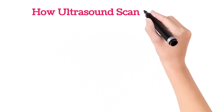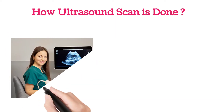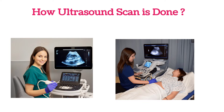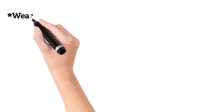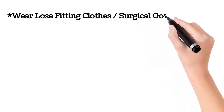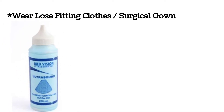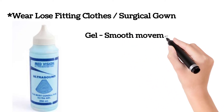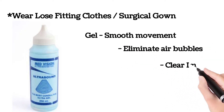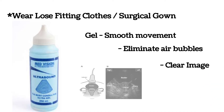It is a simple procedure. During this procedure, the patient is asked to lie on their back on a comfortable table, and depending upon the type of scan, the patient is asked to wear a surgical gown or normal clothes. During the scan, the patient should wear loose-fitting clothes, not tight-fitting clothes. A gel is applied over the skin or abdomen to help smooth movement and eliminate air bubbles so that a clear image is acquired.